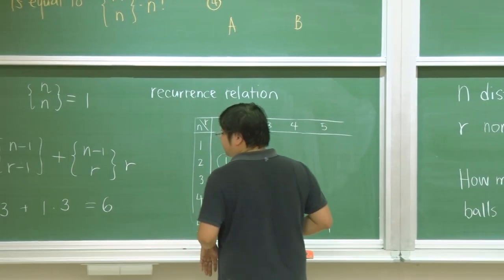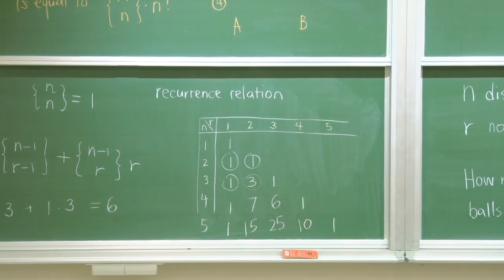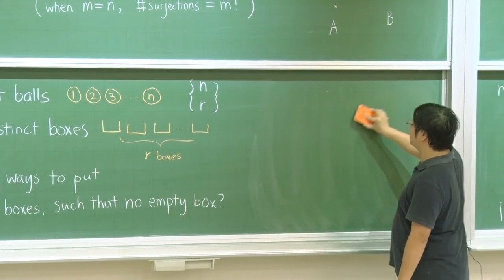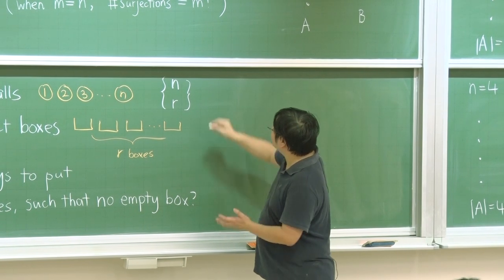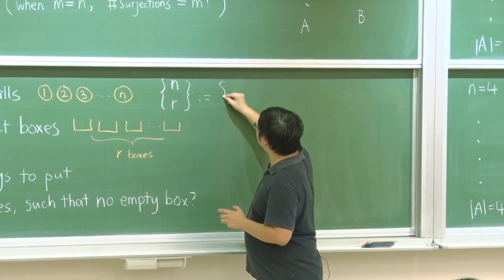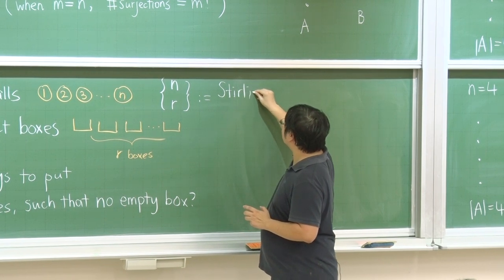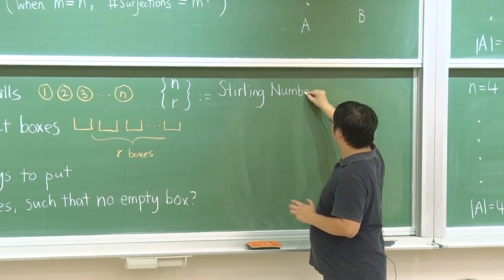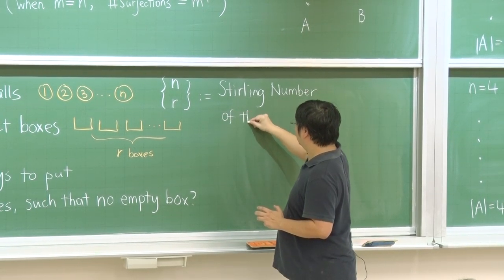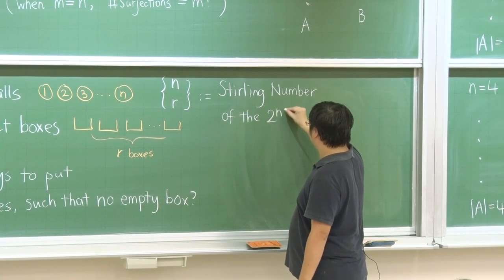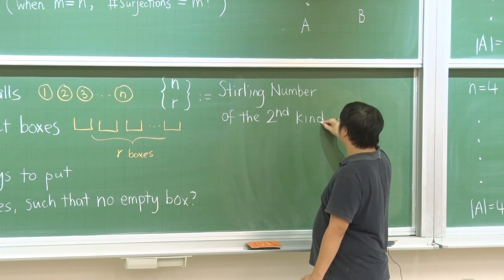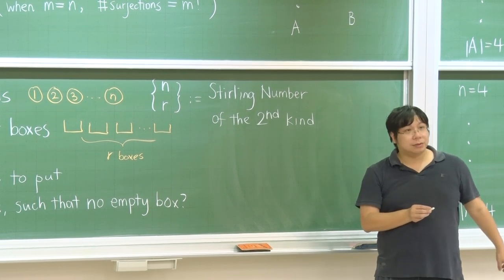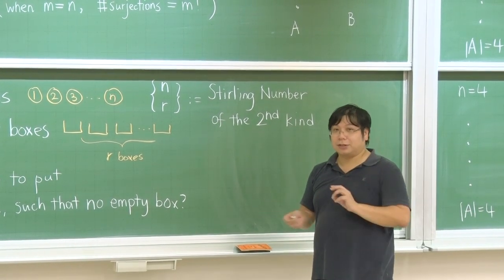This term has a name. It is something important in combinatorics — in counting combinations and permutations. It is called the Stirling number of the second kind. Stirling was a mathematician. You can search the web for Stirling numbers of the second kind and find many amazing results.